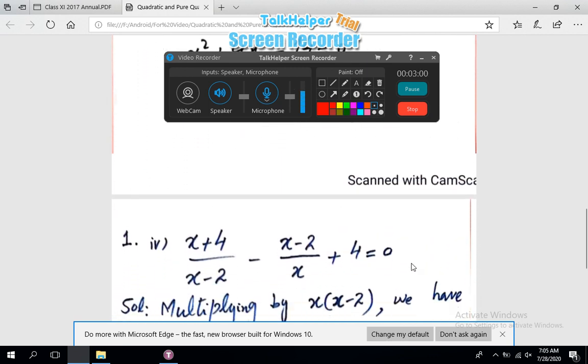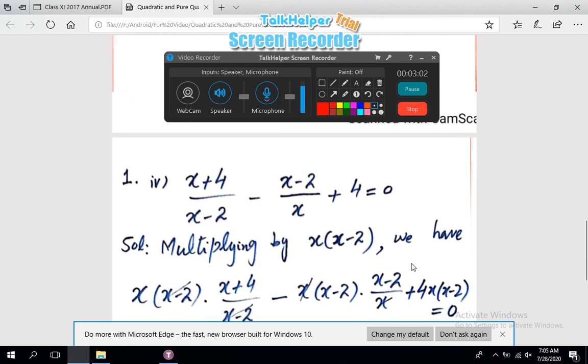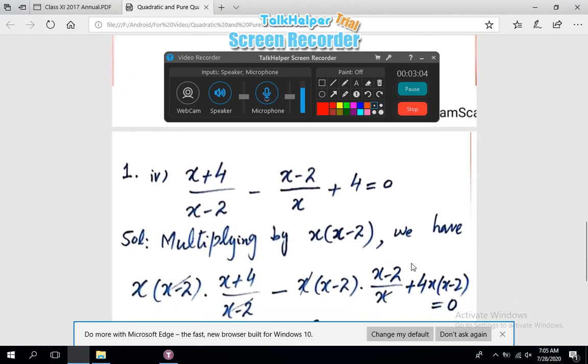We select next one more part, part number 4. Question is (x + 4)/(x - 2) - (x - 2)/(x + 4) = 0.